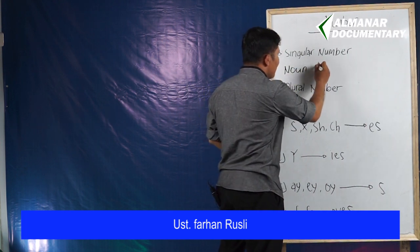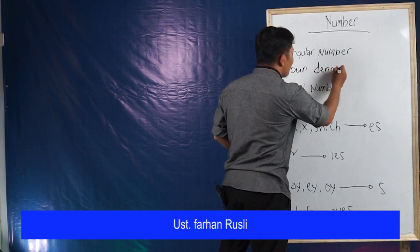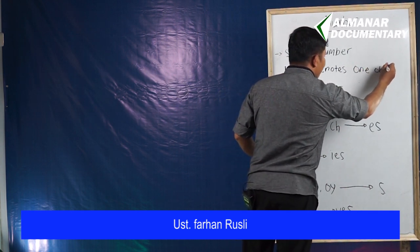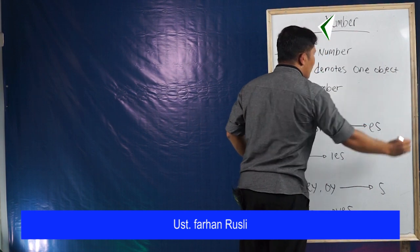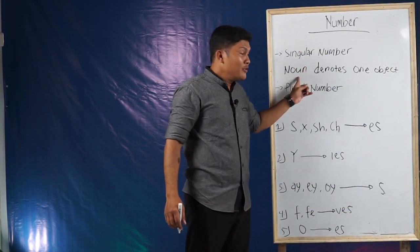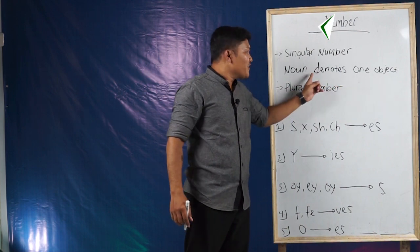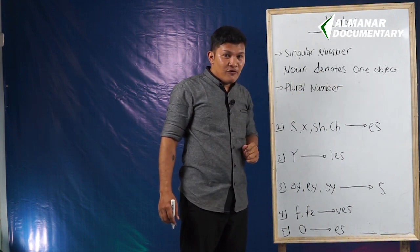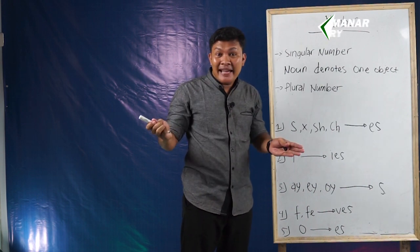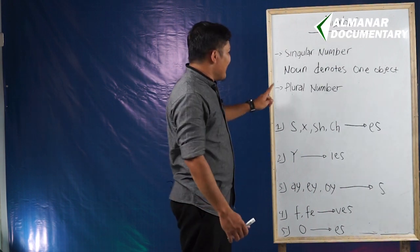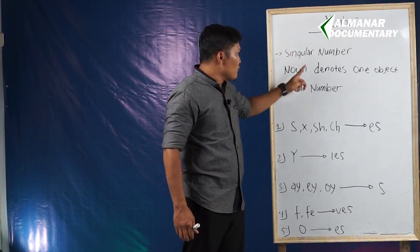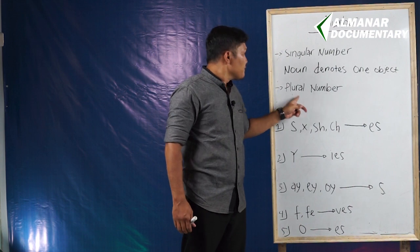Singular number is mentioned when a noun denotes one object. You mark it as singular when a noun denotes one object. For example: a pen, a marker, a man, a chair, etc.